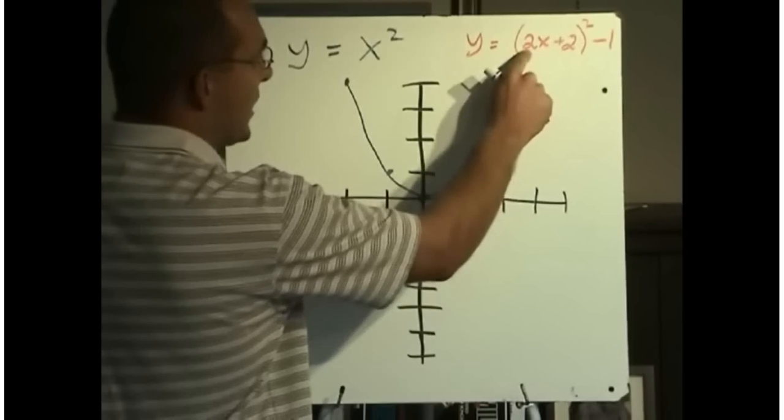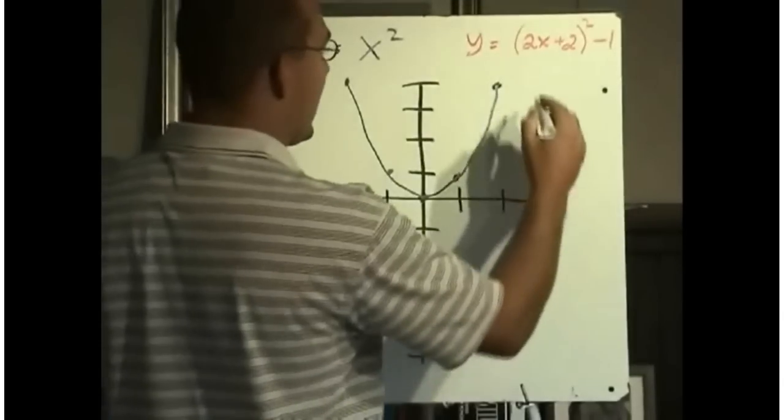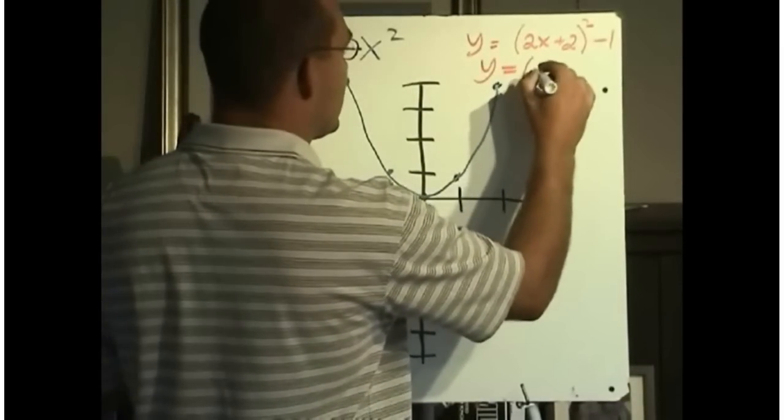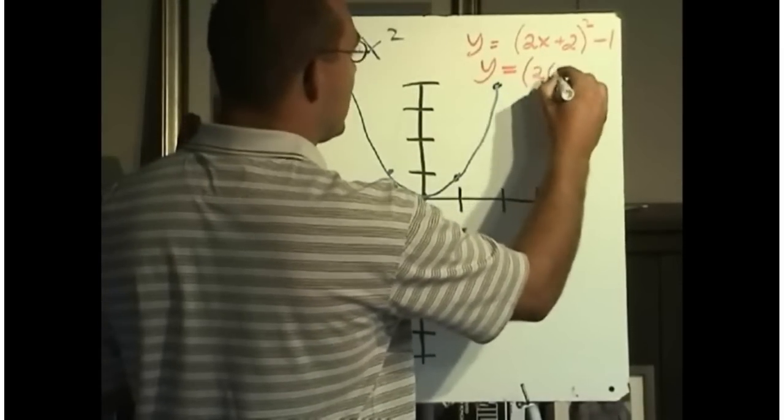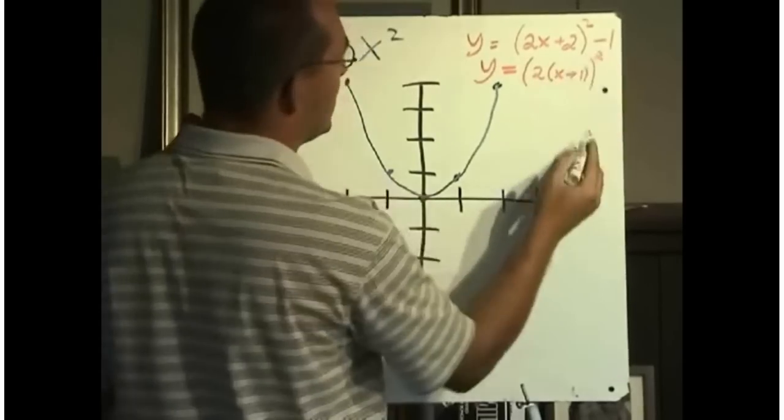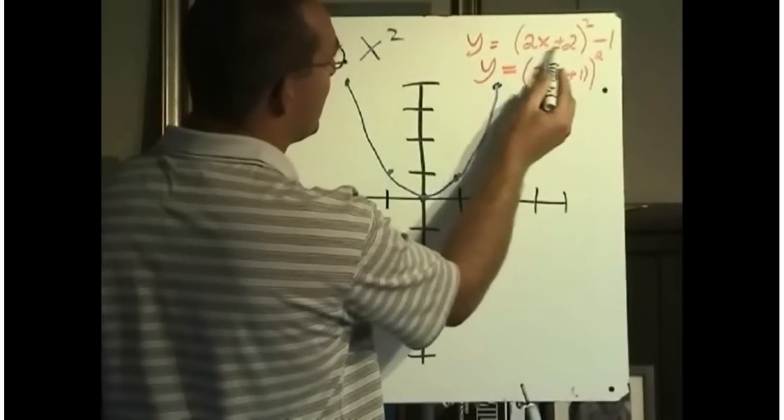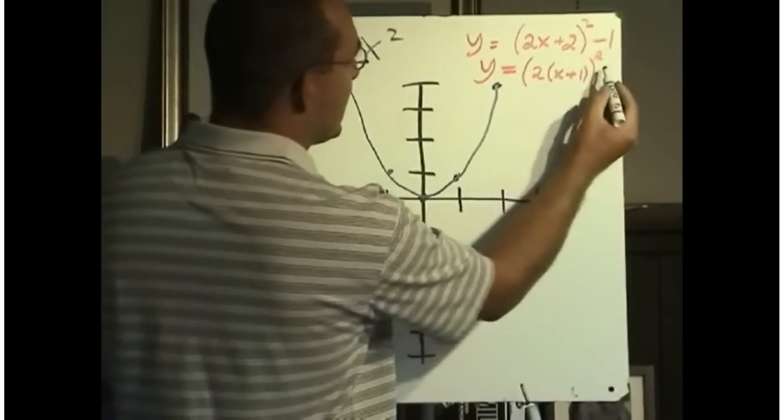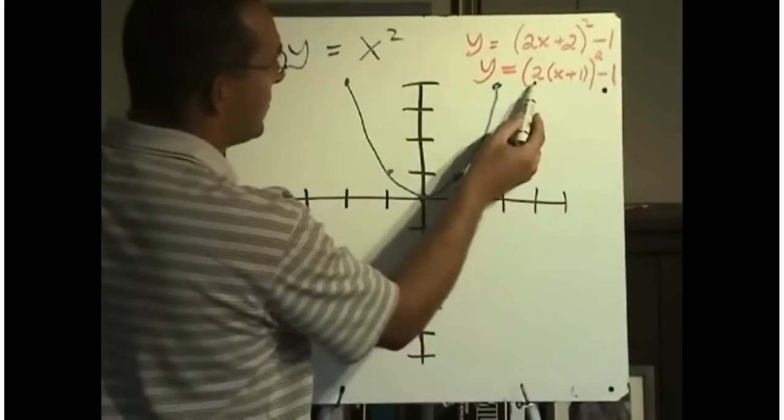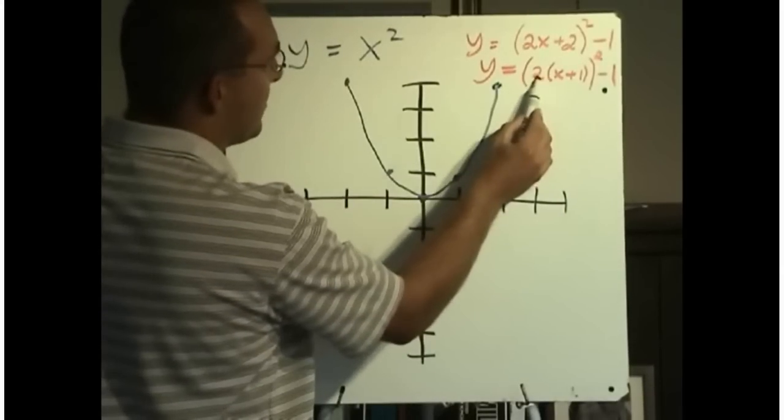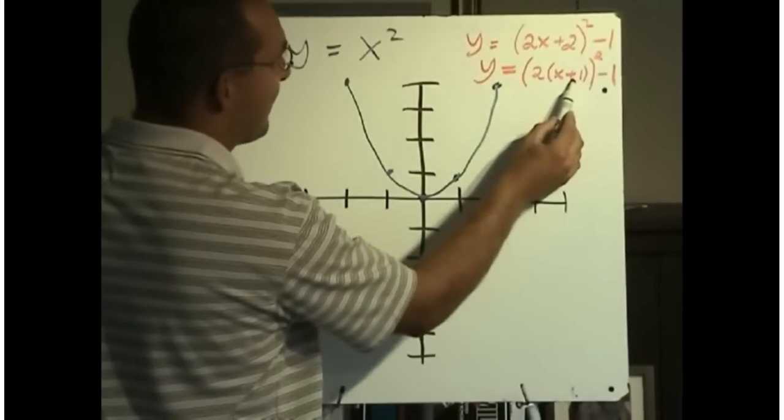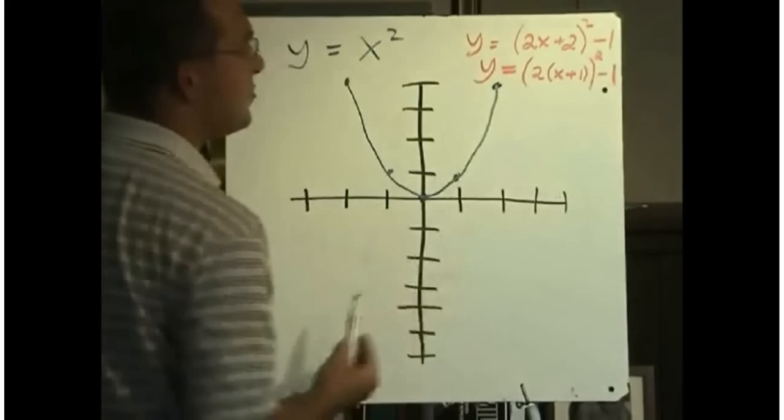But that's not correct, because we need to make sure that coefficient is factored out. So I'm going to rewrite this first as 2 bracket x plus 1 squared. So I factored the 2 out of both of these, and then there's the minus 1 at the end. So what are the transformations here? A horizontal compression by a factor of a half, then I need to move it left 1, and then I need to move it down 1.